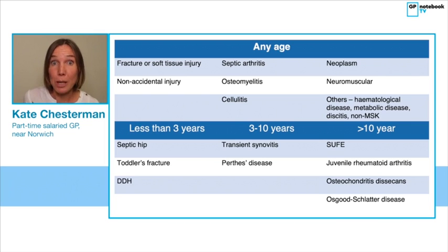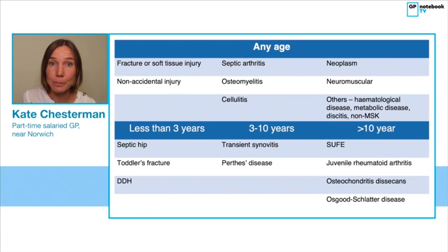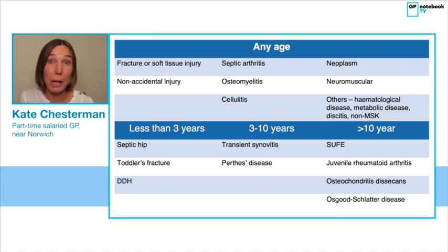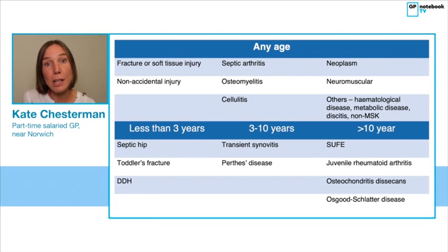In our middle age group — between about three and ten, which is the age group that Jim falls into — other things to be aware of are transient synovitis and Perthes disease. Perthes disease is an idiopathic avascular necrosis of the developing femoral head. It's slightly more common in boys than girls and usually has quite an insidious onset over weeks. These children usually have limited hip rotation, and the pain can be referred to their groin, thigh or knee. It's bilateral in about 10% of cases, but children are usually systemically well with it.